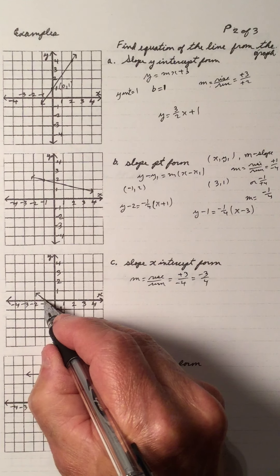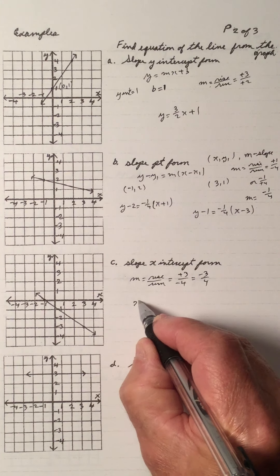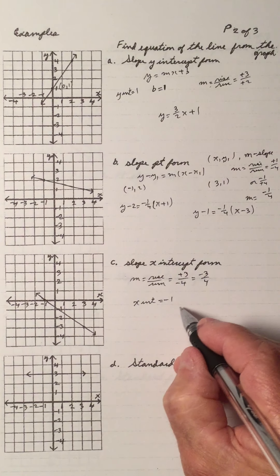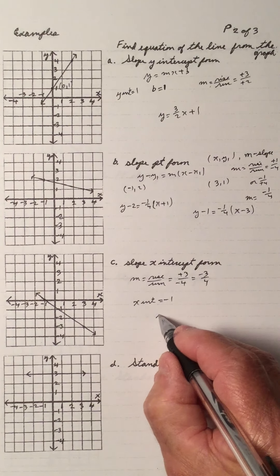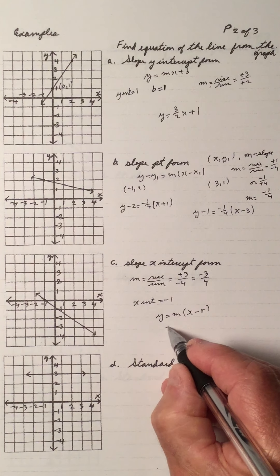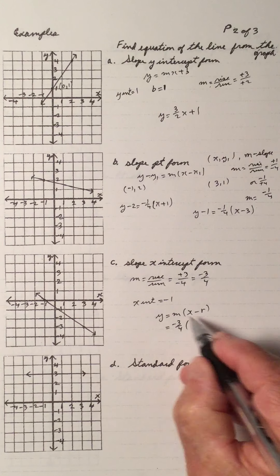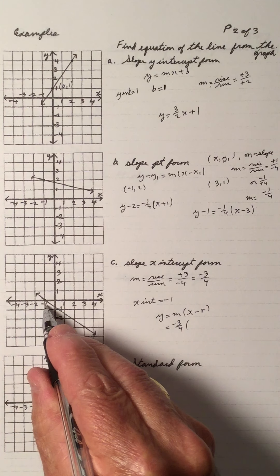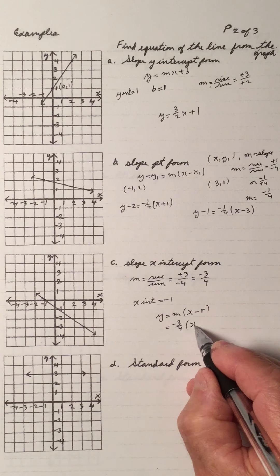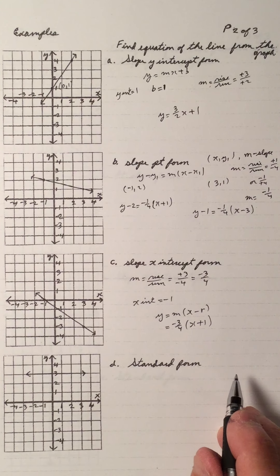And the x-intercept is negative 1. So my equation is y equals m times x minus r. The slope is negative 3 quarters and the x-intercept is negative 1 right there, so that's an x plus 1 when you plug it in. Done.